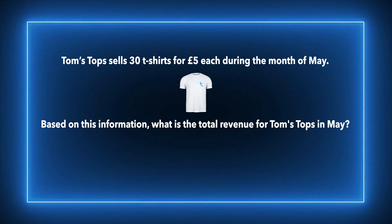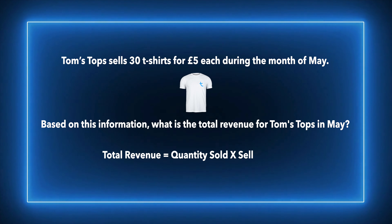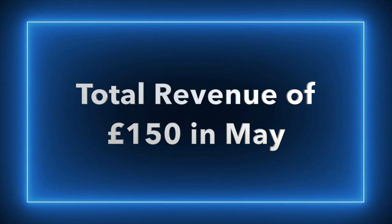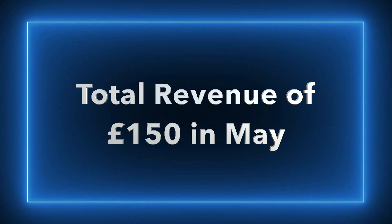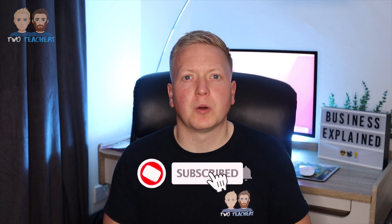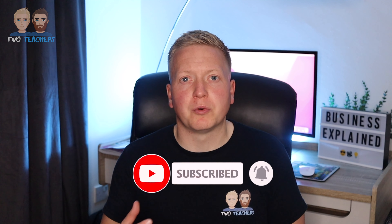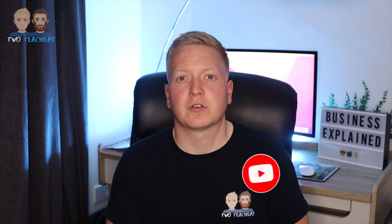Using the formula of quantity sold multiplied by the selling price, all you need to do is multiply the 30 t-shirts sold by the selling price of £5, giving you an answer of £150. In the month of May, Tom's Tops had a total sales revenue of £150 — the total amount of money received from customers before taking away any costs of production and other background costs.